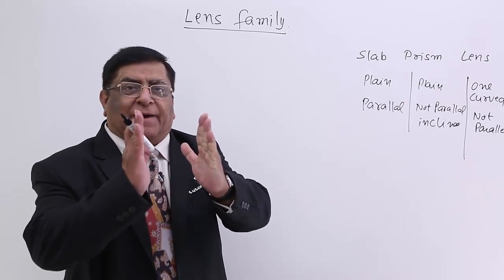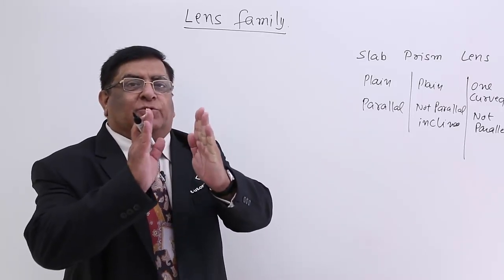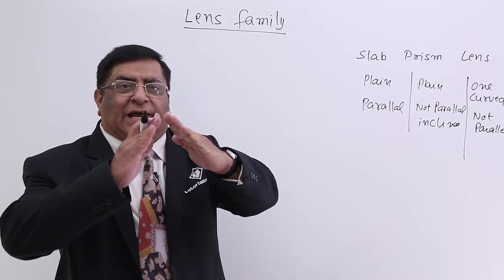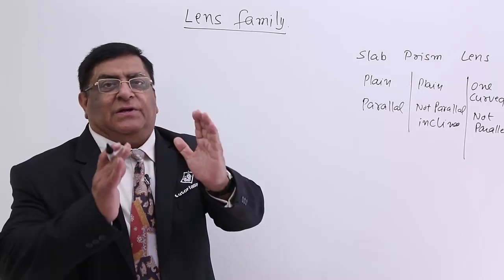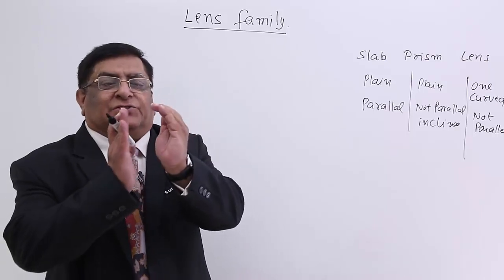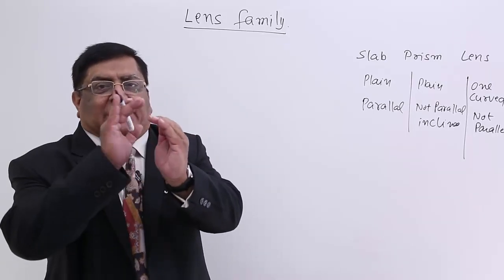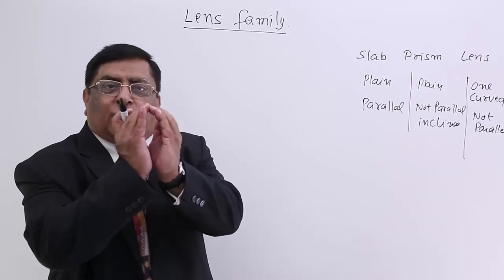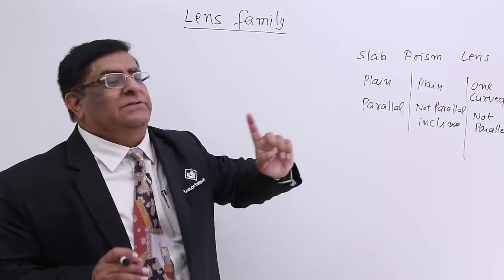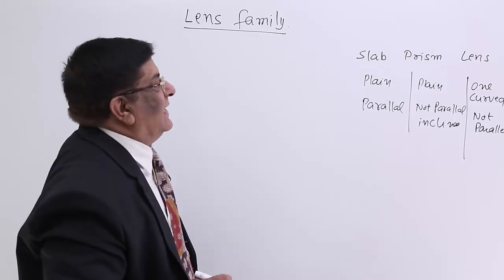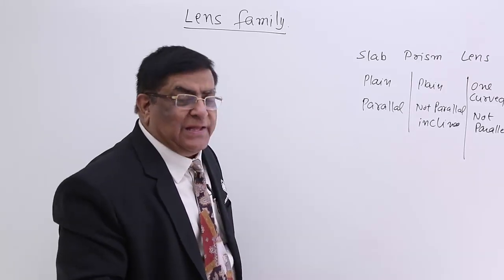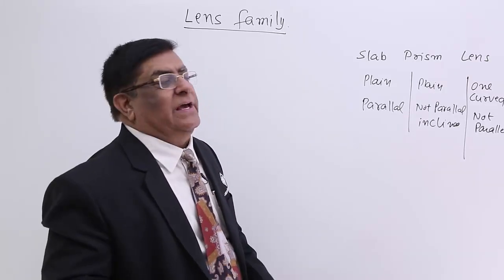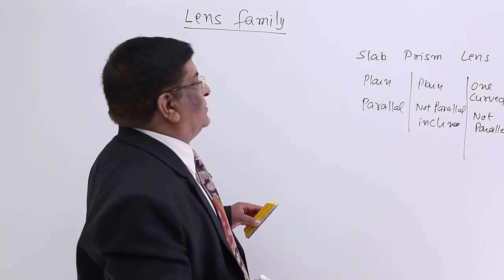So this is the basic difference: slab has both surfaces plane and parallel; prism has both surfaces plane but inclined; and if at least one surface is curved, or both are curved, then it is a lens. Now within lenses, we have further categorization.